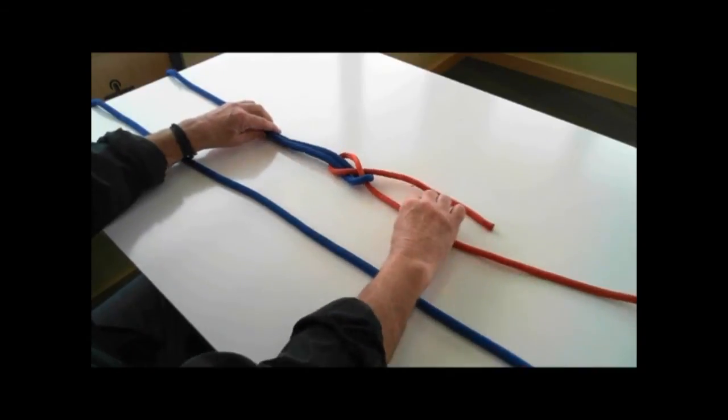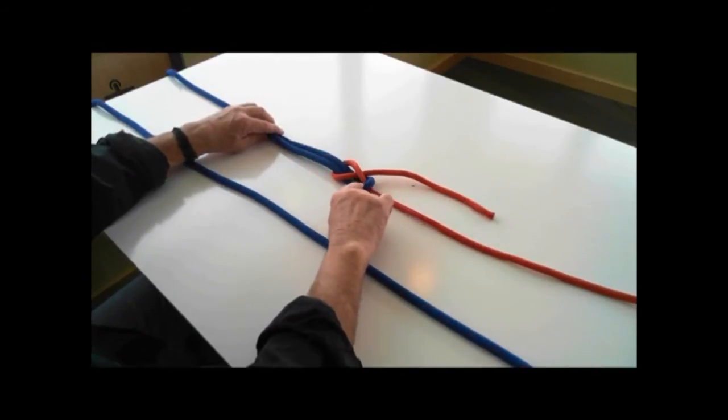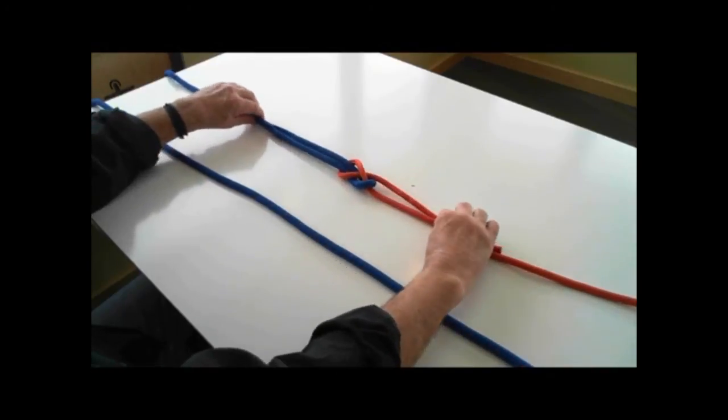Now we have, instead of bite on bite, we have a bite and a trap. This ties two lines together.